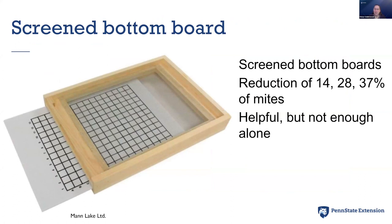Another way to remove mites from the hive is to use a screen bottom board. You could buy a solid wood bottom board, or one with a screen underneath. Mites naturally fall off bees here and there, and they fall down through the screen. With the insert removed, the mites fall out onto the ground below — too far for them to crawl back up and return to the hive. Research has shown this can reduce the mite population by 14, 28, or 37% depending on the study. This is helpful and constantly removing mites from your hive; however, mites still generally build up to damaging levels, so you can't just give them a screen bottom board and trust that's all you need.